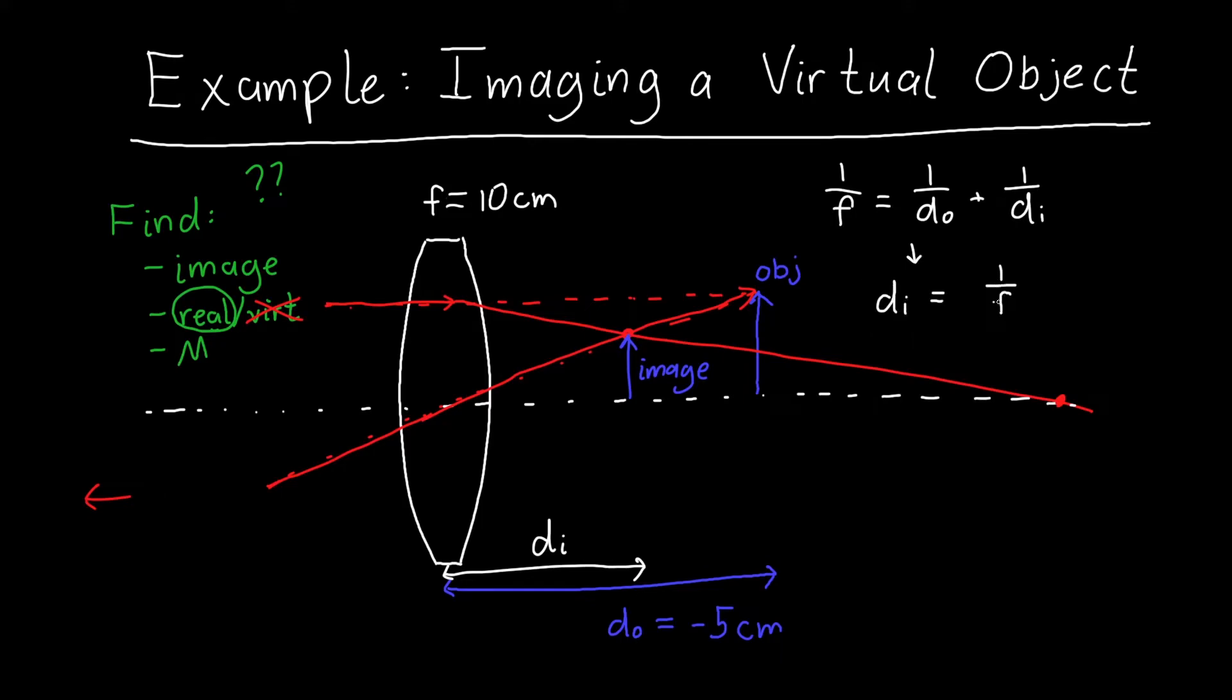Or I can solve for di: di is equal to 1 over f minus 1 over do, all inverted. Now if I plug in f, so f was 10 centimeters, so 1 over 10 centimeters. And I plug in do - now this is important - do is negative 5 centimeters because this is a virtual object. So I have 1 over 10 minus negative 1 over 5, or plus 1 over 5, all inverted.